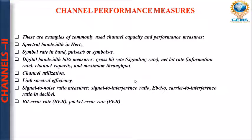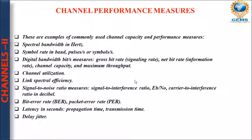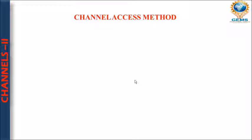Next is bit error rate and packet error rate. Bit error rate is calculated in the data link layer and packet error rate is calculated in the network layer. Latency in seconds means the amount of time needed to search a particular bit. Propagation time and transmission time also play an important role in performance measures. Delay jitter is the delay in receiving a packet from sender to receiver end, which may deteriorate the quality of the product.